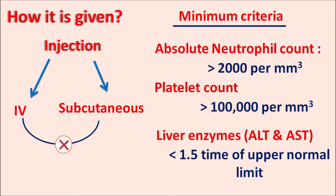That's about tocilizumab, which is a humanized monoclonal antibody acting as an IL-6 receptor antagonist. It can block both soluble and transmembrane IL-6 receptor subtype alpha, thereby inhibiting both inflammatory and pro-inflammatory responses. In our next video, we will come with another interesting drug. Hope you have enjoyed this video. If you like this video, please subscribe to our channel, share it with your friends, and post your comments in the comment box. Thank you for watching.